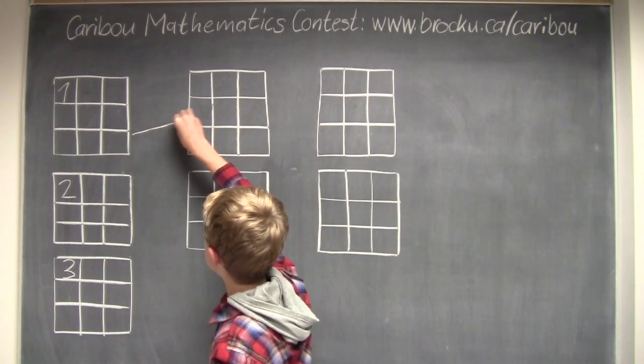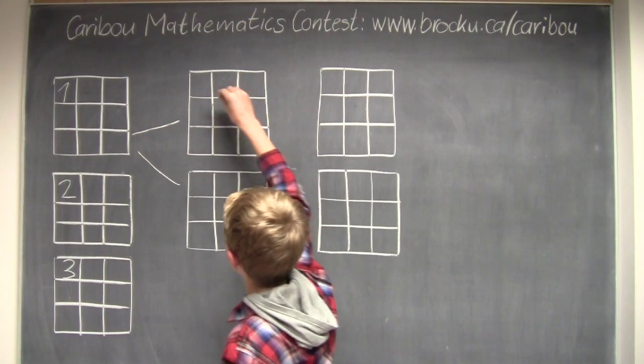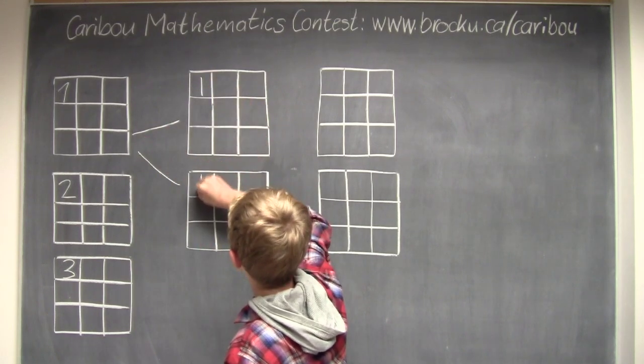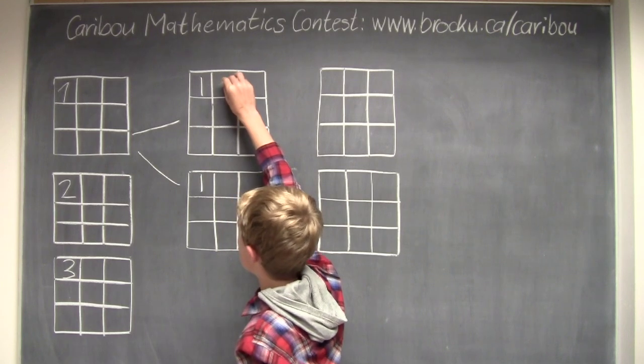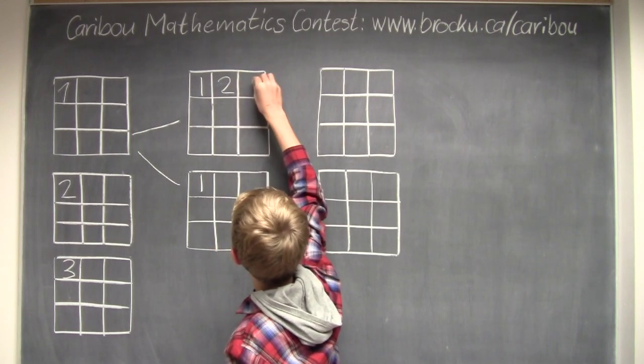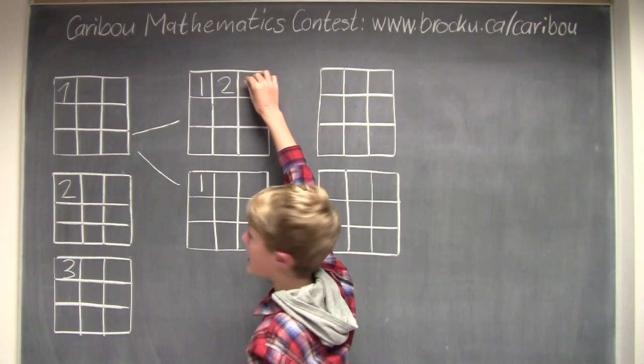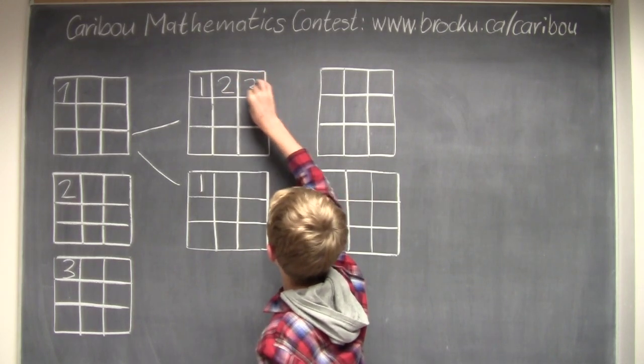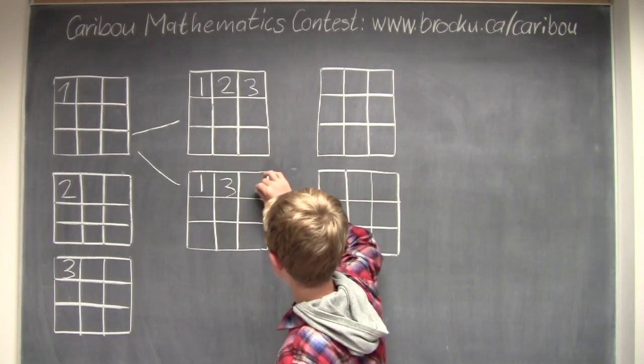So now for the next 2 cases, we would have 2, there can either be 2 or 3. So if I have 2, that means there has to be 3. And if I have 3, it means there has to be 2.